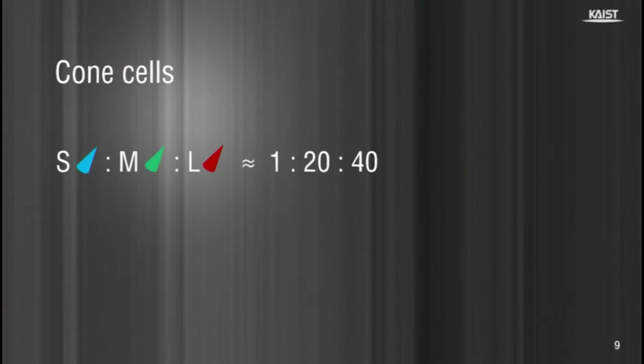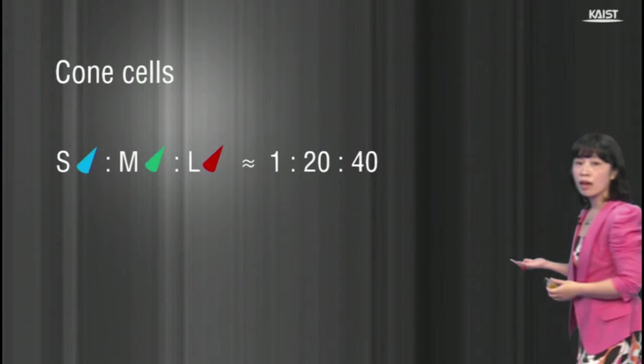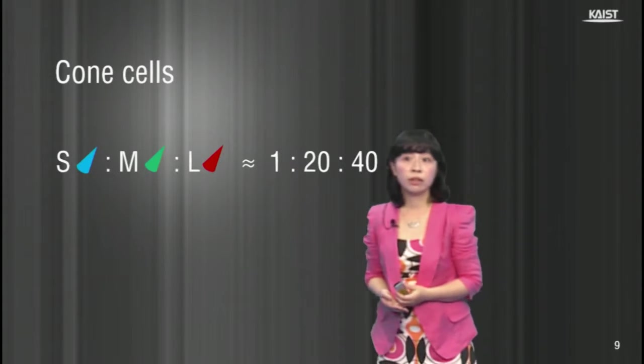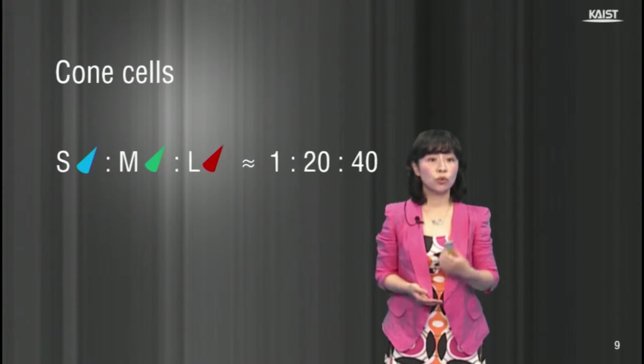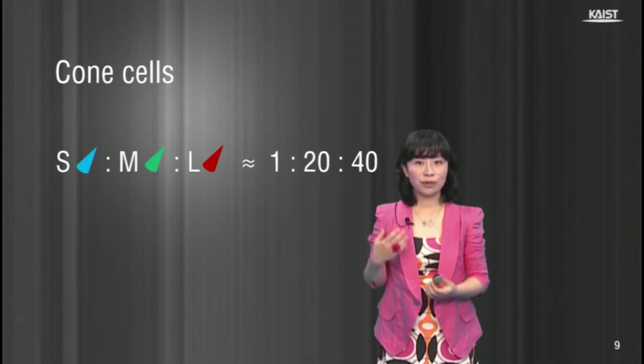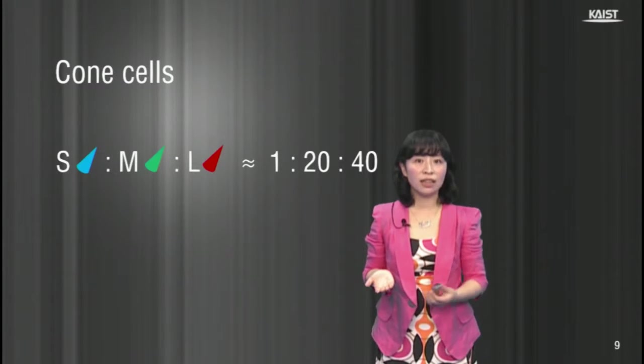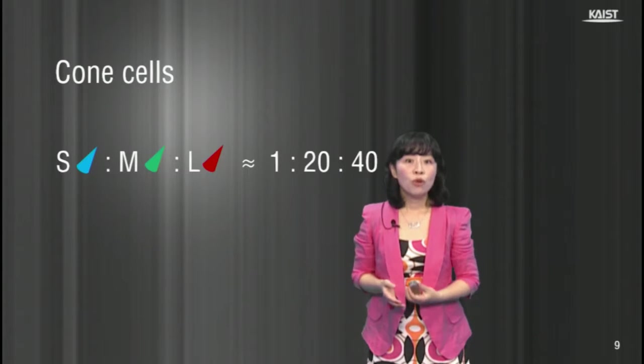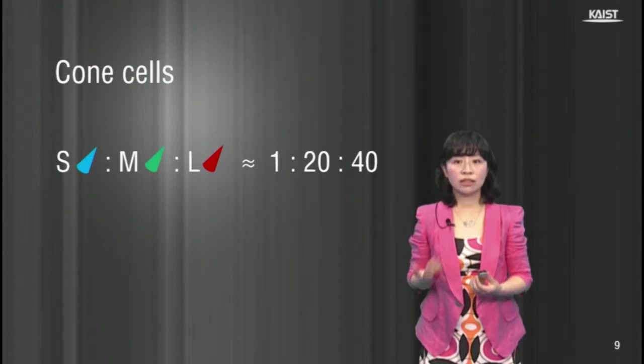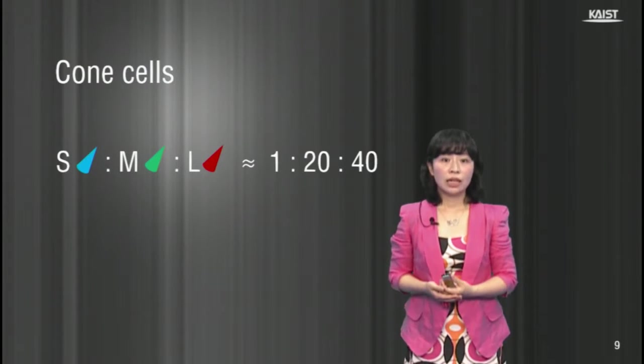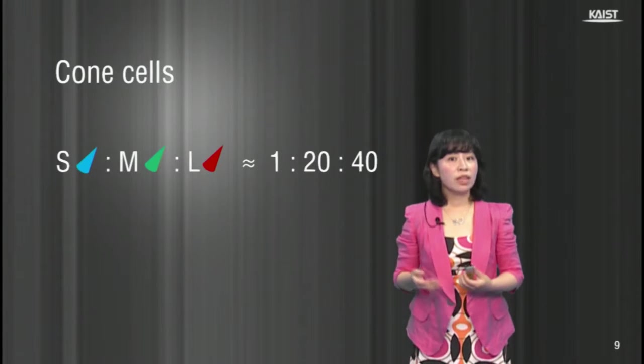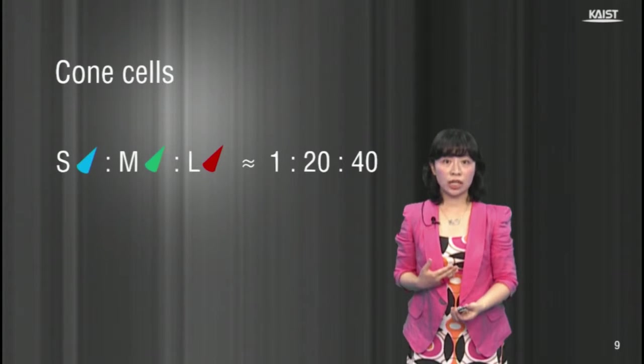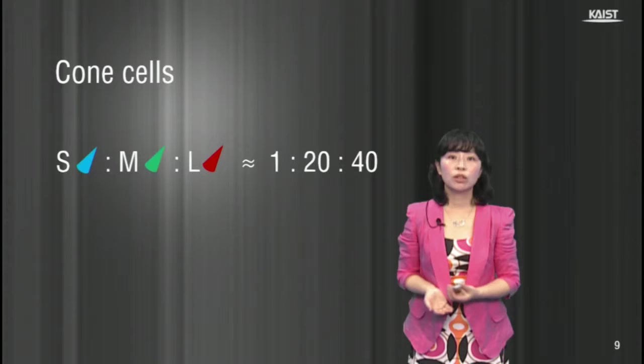In terms of amount, the ratio of S, M, and L is approximately 1 to 20 to 40. This does not mean that we perceive red or green more easily than we do blue. Ratio-wise, the amount of S-cone is much less than the other two, but the S-cone is pretty much essential to perceive colors in a proper way.